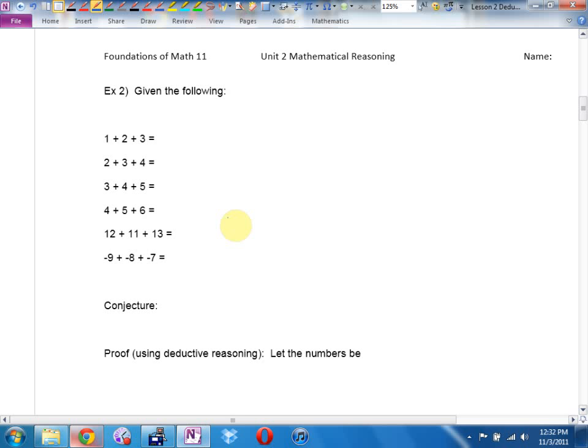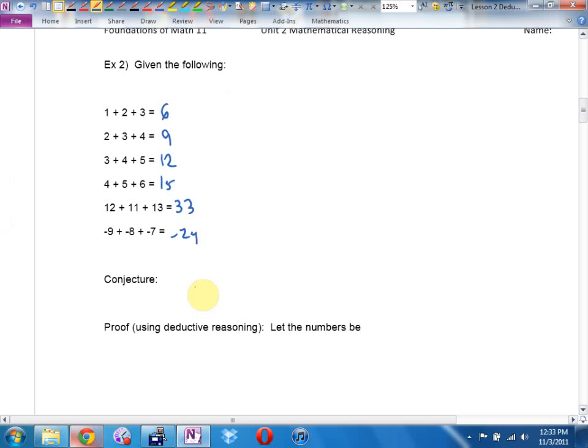It says, given the following: 1 plus 2 plus 3, well, that's 6. 2 plus 3 plus 4 is 9. 3 plus 4 plus 5 is 12. What was the pattern that we noticed if you're adding consecutive integers? What was the 3 consecutive integers? What was the shortcut for getting the answer? Yeah. Okay, so 3 times 15, 3 times 33, 3 times negative 8, negative 24. Is that okay, Jeremiah? Let's make that a negative 24. Sorry?